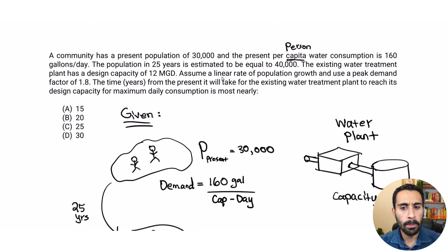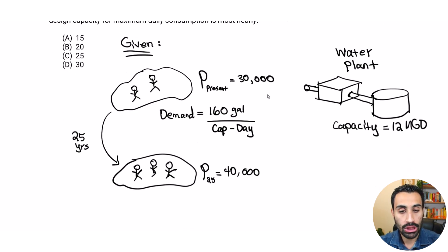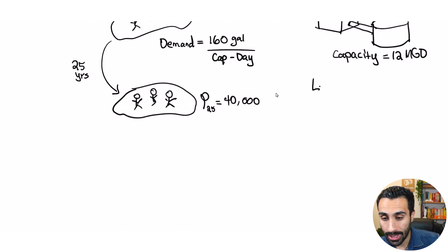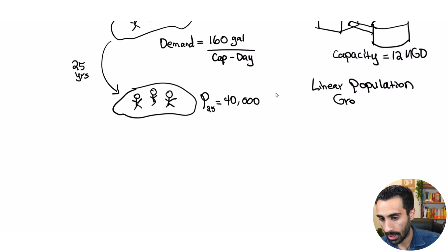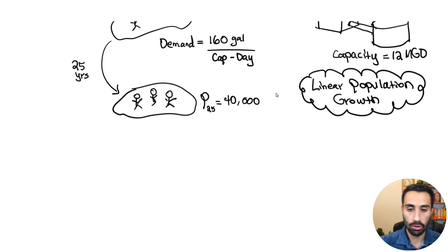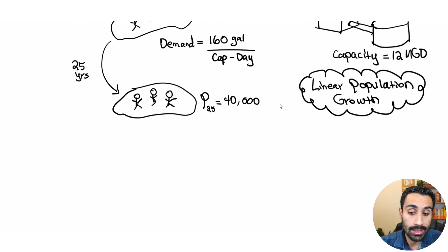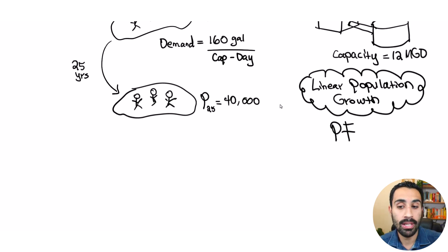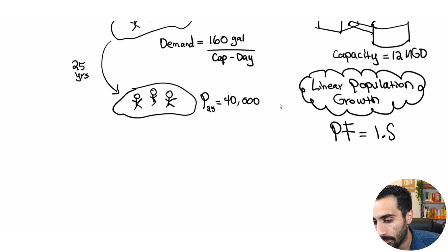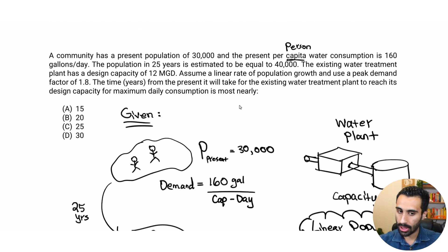Assume a linear rate of population growth — this is an assumption we have to make, linear population growth. We also need to use a peak demand factor of 1.8. We use these often when calculating water demand. The peaking factor is 1.8, and that's basically all the numbers given.